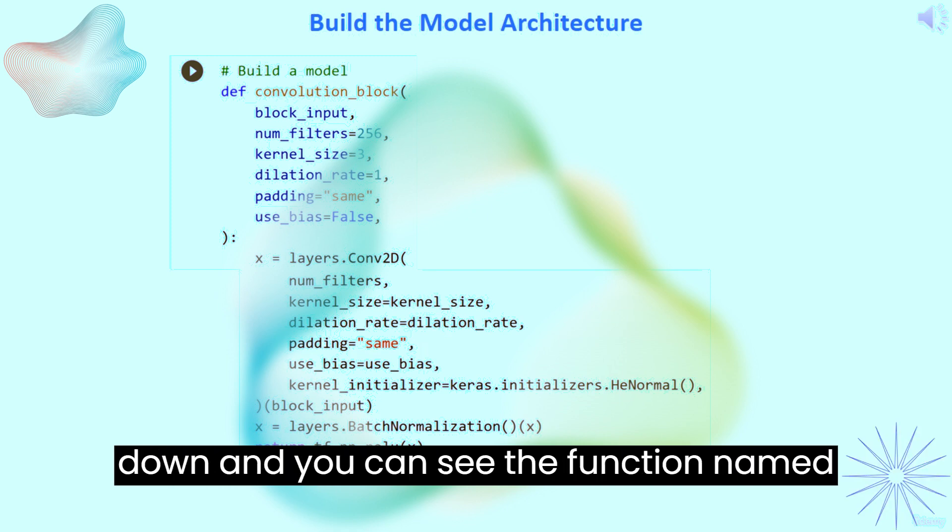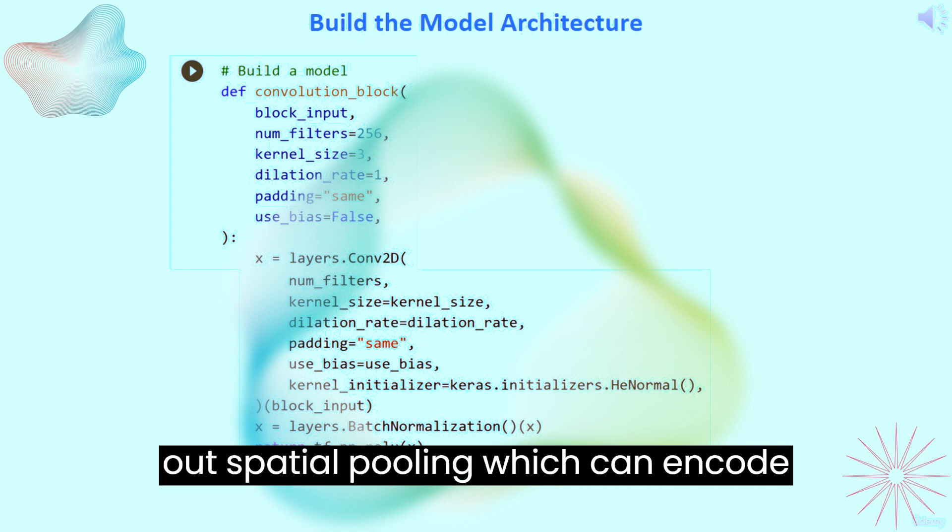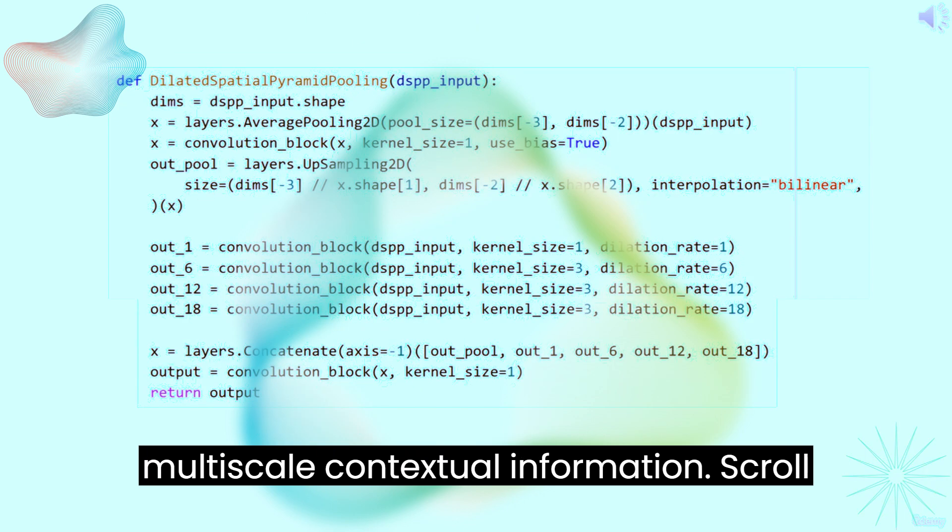Scroll down and you can see the function named dilated spatial pyramid pooling. This carries out spatial pooling, which can encode multi-scale contextual information.